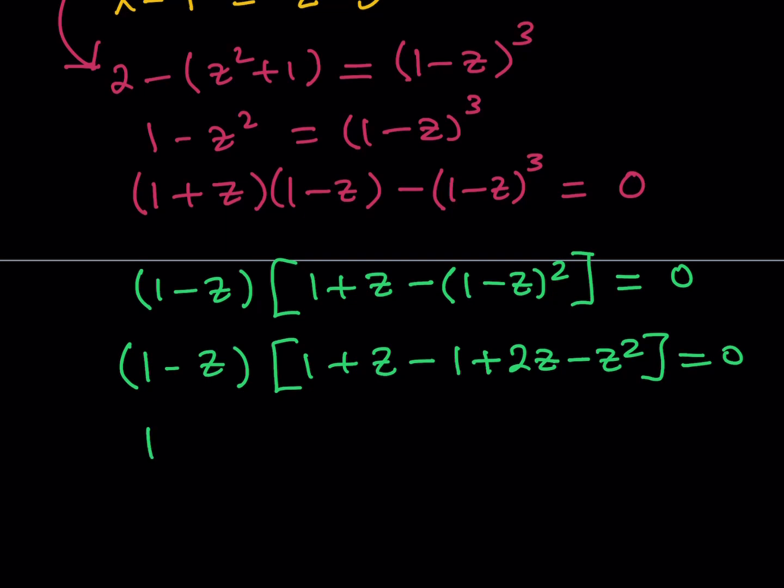1 minus z basically stays the same. And this expression here can be written as negative z squared plus 3z. Obviously, the 1 cancels out, and we end up with a simple equation. It's polynomial, so we can find the roots very easily. And it's in the factored form, pretty much.